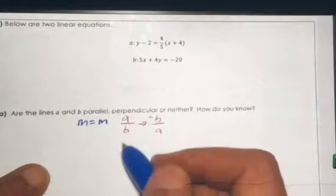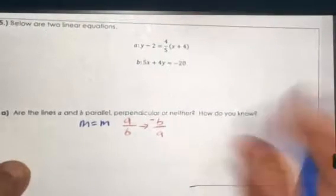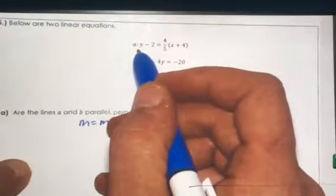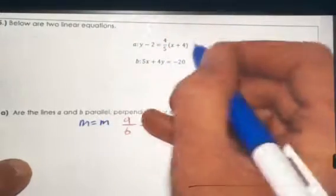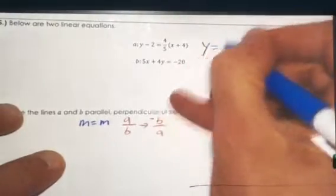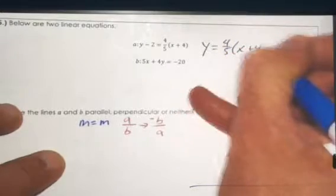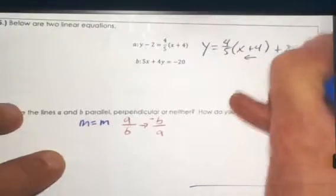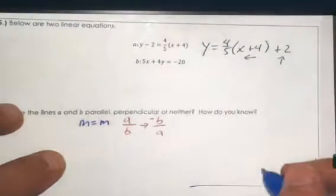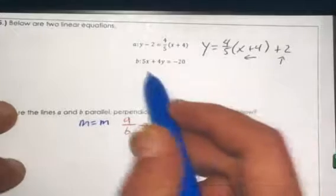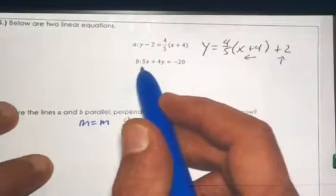Then the answer would be neither. Okay, so if I look at equation A, I should be able to see the slope pretty clearly. I just need to solve for y. I can add two to both sides. For A, I get y equals four-fifths times (x + 4). That says go left four. Then I added two to both sides, plus two, so that goes up. This gives us the line in point-slope form. Now we'll come to B and need to solve this for y.